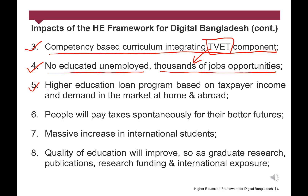Number 5: Higher Education Loan Program Based on Taxpayer Income and Demand in the Market at Home and Abroad. There may be several categories of higher education loan programs such as full free, government subsidized, and full fee payment, based on taxpayer income. Government may provide further subsidies to courses and programs based on their demand in the job market, particularly in Bangladesh. Number 6: People will pay taxes spontaneously for their better futures. In order to get a government loan or subsidies for higher education, parents or legal guardians of students should have income tax returns cleared, even if there is a zero return. Otherwise, they will be ineligible for such opportunities.